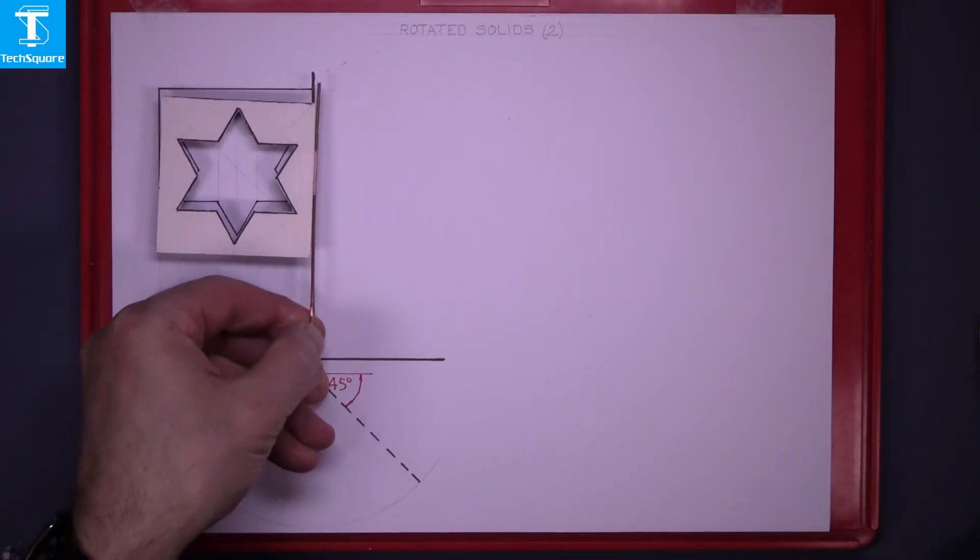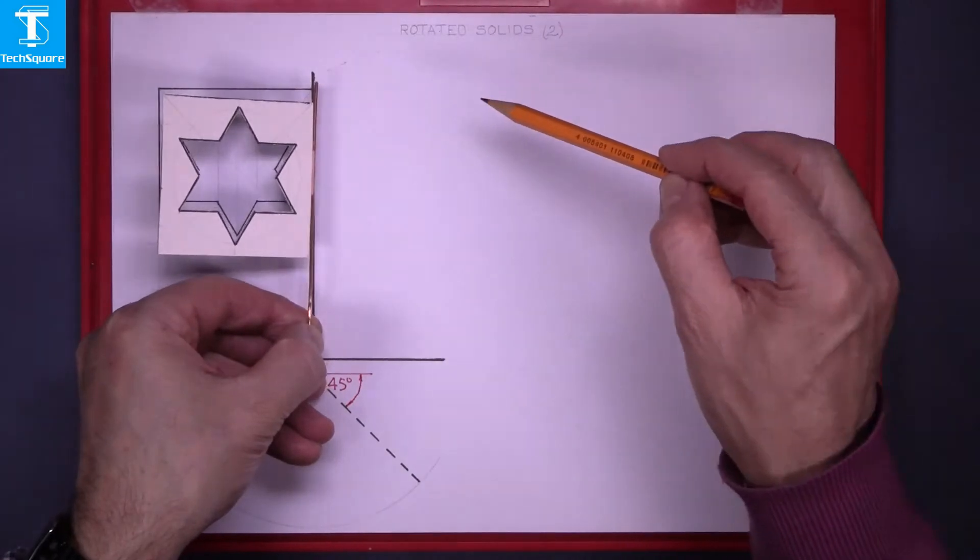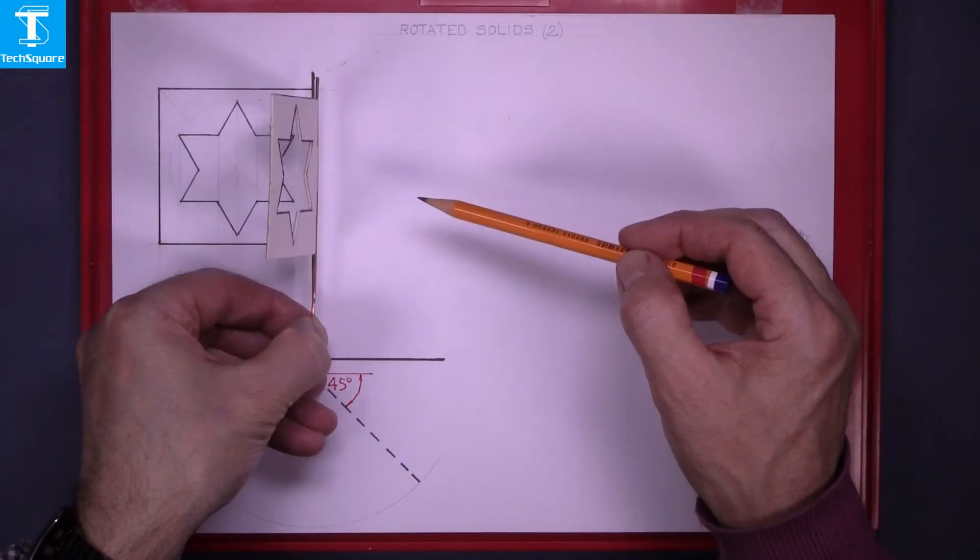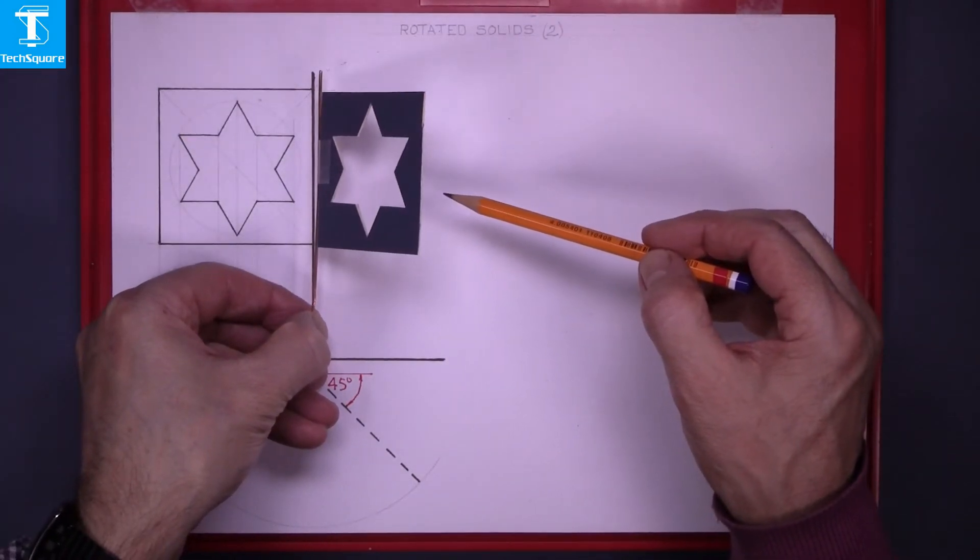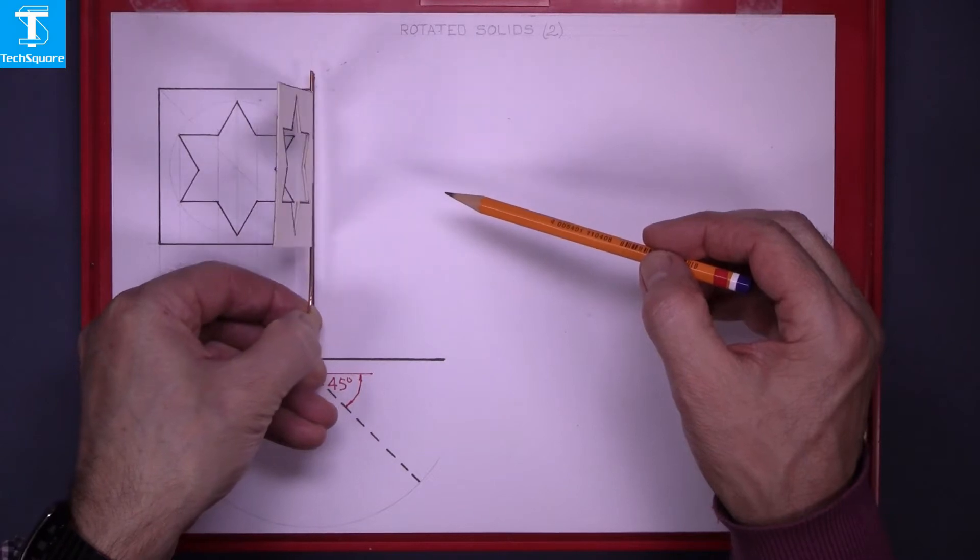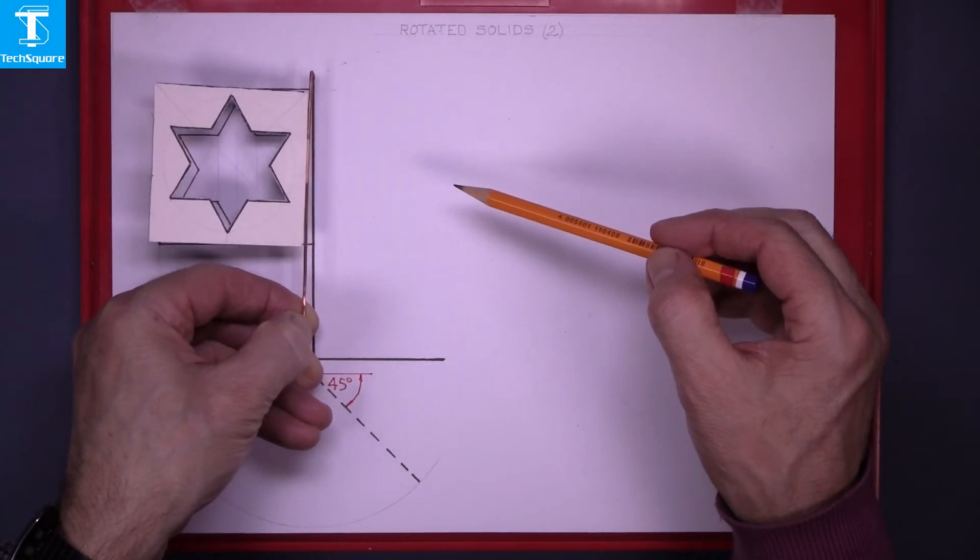In the elevation, as we look at the front of it, all the points will move horizontally across. So as it rotates out to that position, every point moves horizontally.